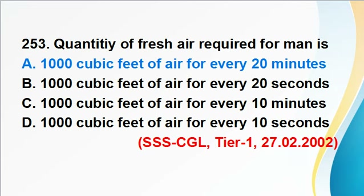Question 253: The quantity of fresh air required per person is one thousand cubic feet of air for every 20 minutes. Answer A is correct — 50 cubic feet of air is required per minute, which means 1000 cubic feet for every 20 minutes.